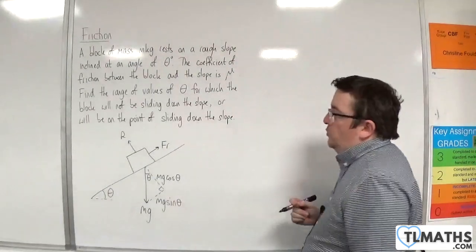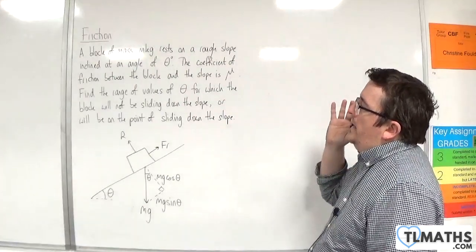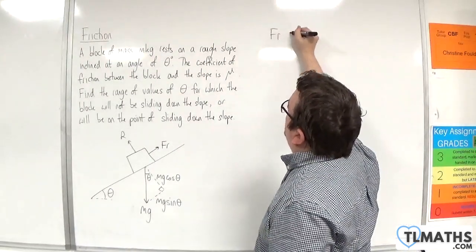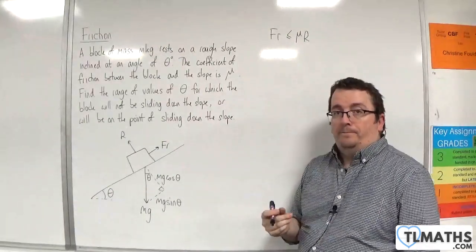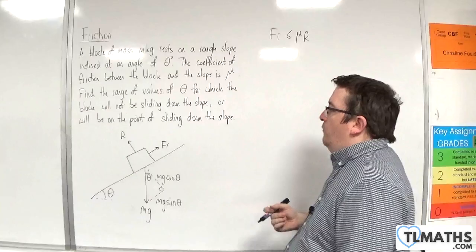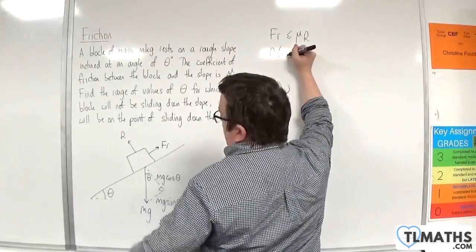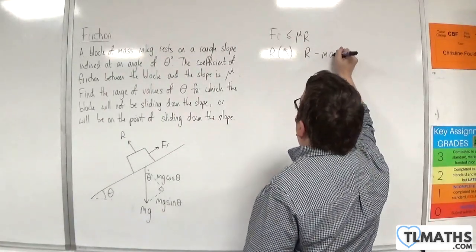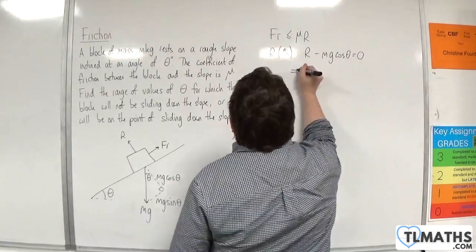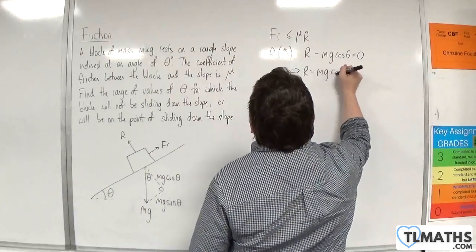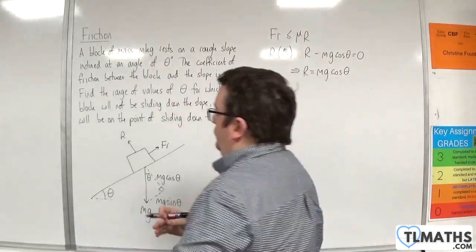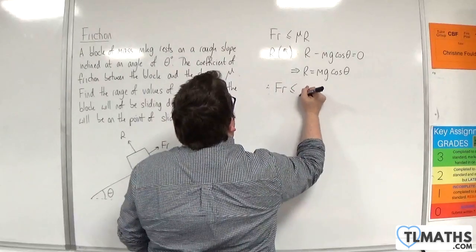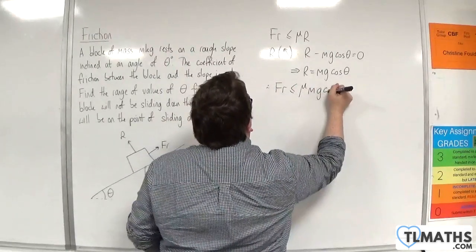So this is the situation. If the block is not sliding down the slope, or it's on the point of sliding down the slope, then the friction is going to be less than or equal to mu times R. If we resolve perpendicular to the slope, taking that direction as positive, we have R minus mg cosine theta equals 0. So R equals mg cosine theta. Therefore, the friction must be less than or equal to mu times mg cosine theta.